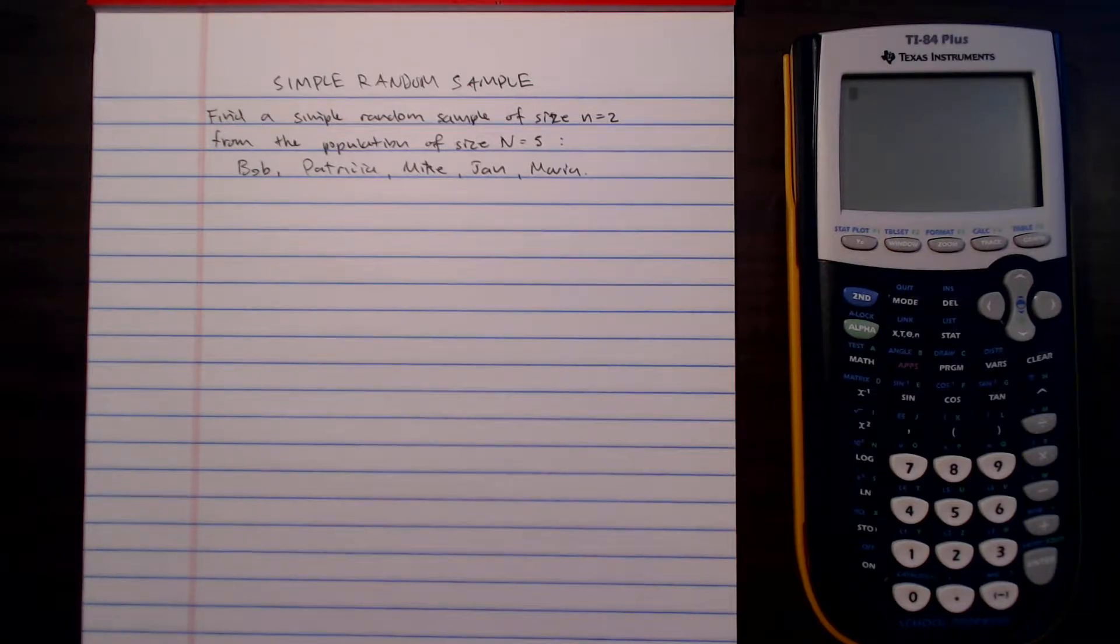For this example, let's find a simple random sample of size 2 from a population of size n. So let's say we have Bob, Patricia, Mike, Jan, and Maria, and we want to choose two of these people as our sample.